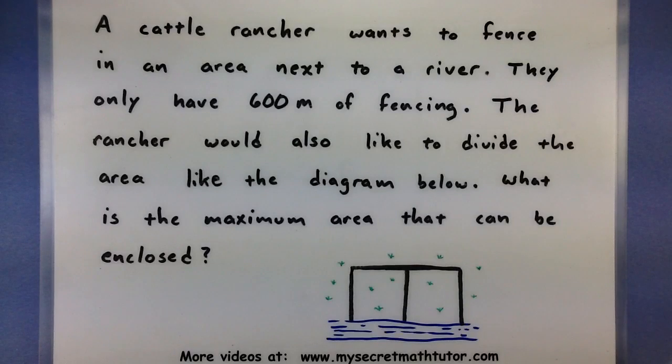In this word problem we have a cattle rancher who wants to fence in an area that's next to a river. They only have 600 meters of fencing and they would also like to divide it into two sections like the diagram below. Some things you want to note about this diagram: since it is along the river, we don't need any fencing along that edge.